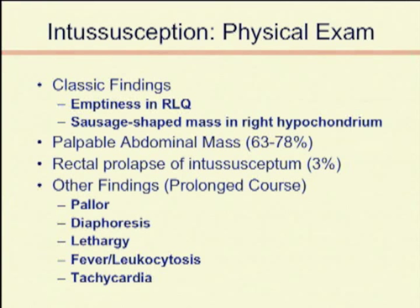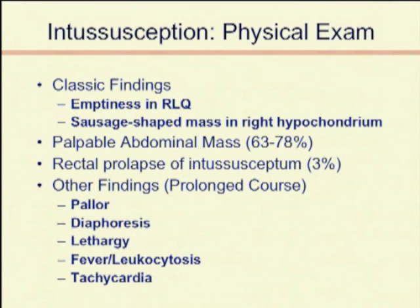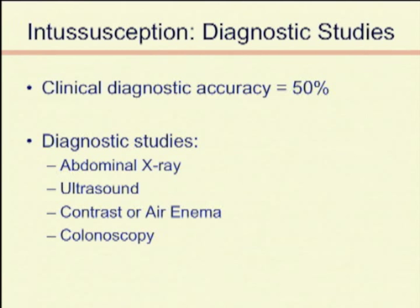These other late findings are things you're going to see later on in the pathogenesis of disease. The fact of the matter is our history and exam are only going to diagnose kids 50% of the time, probably less, and we need to rely on radiographic studies.